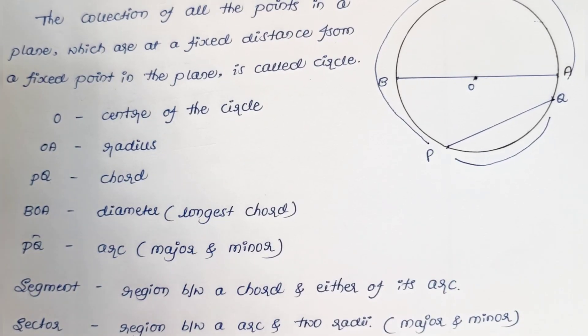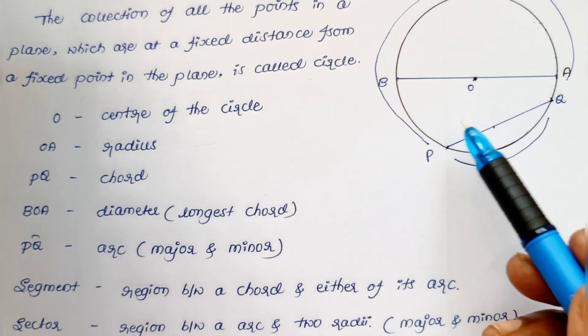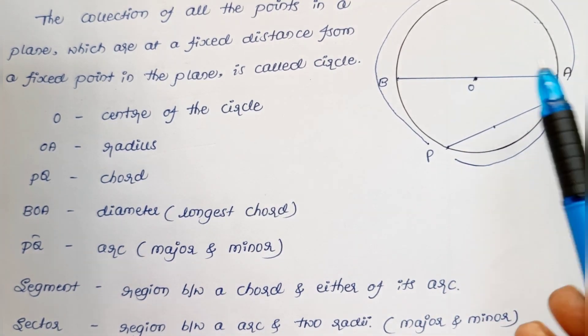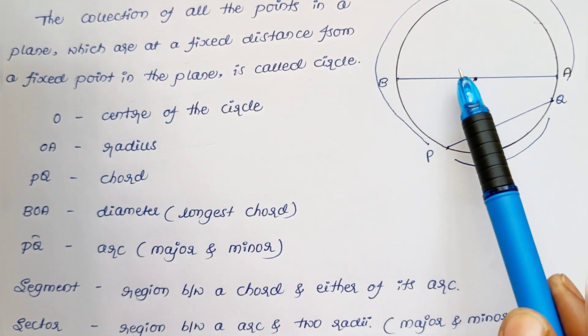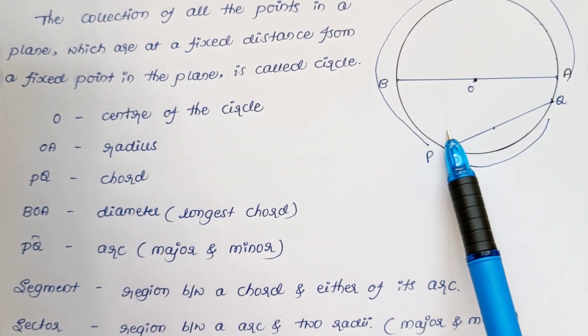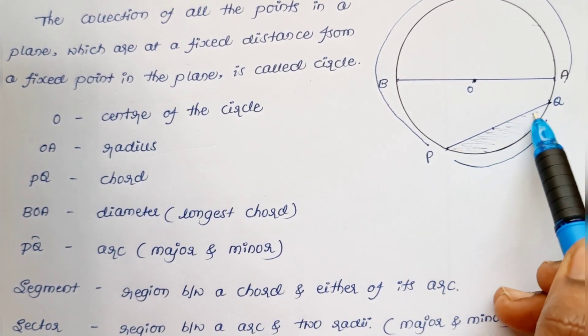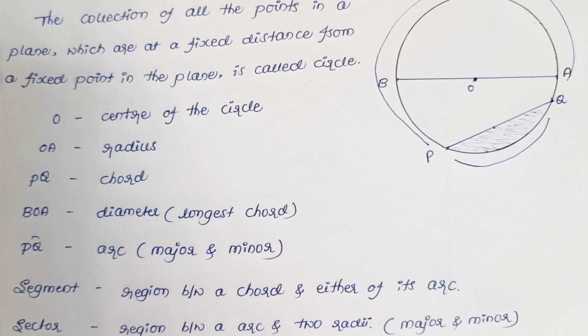The next important term is segment. Segment means the region between a chord and either of its arcs. This region is called the major segment and this region is the minor segment.